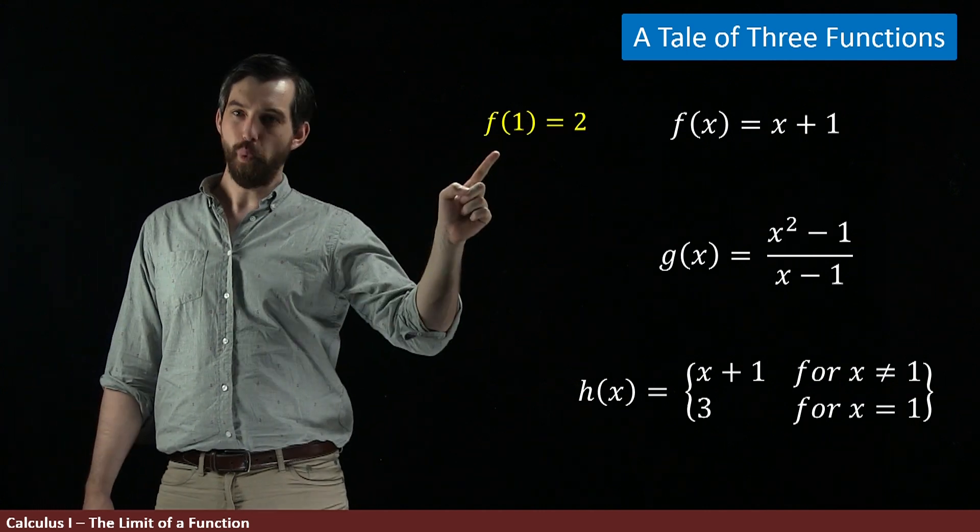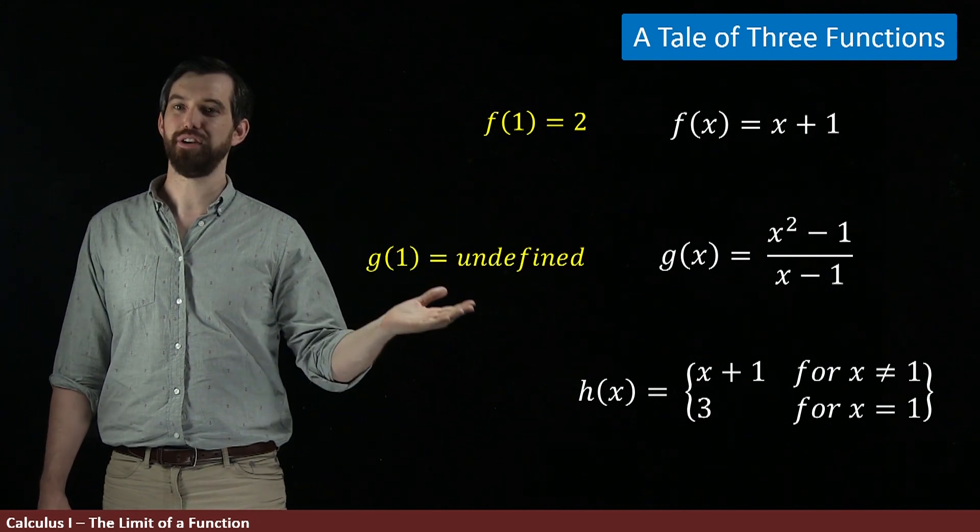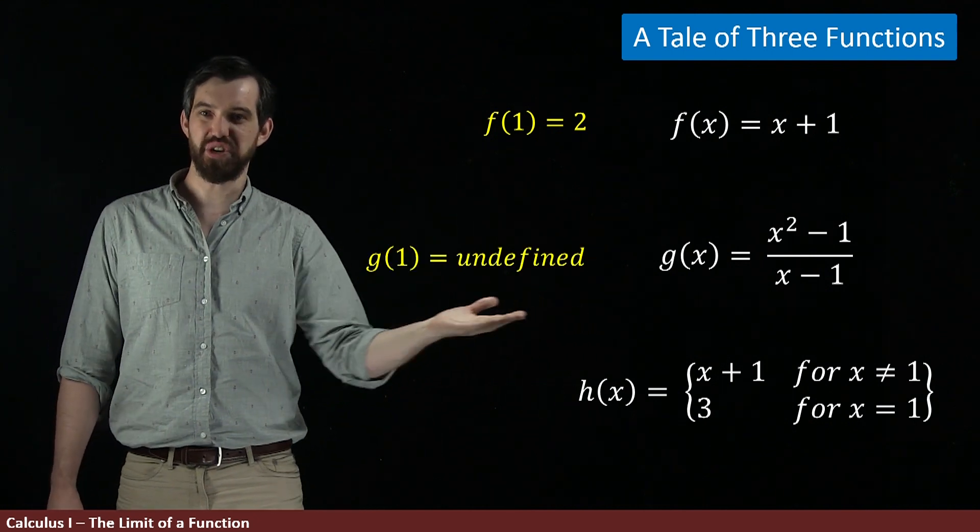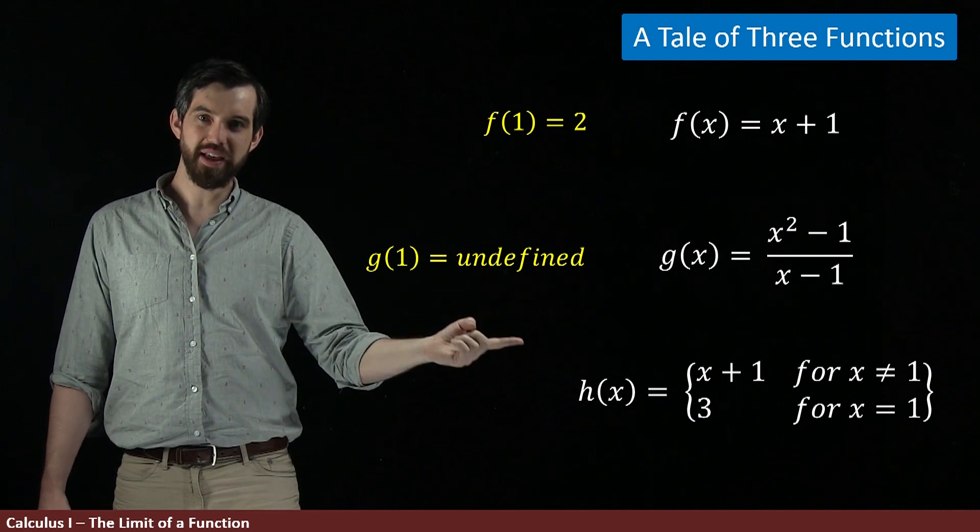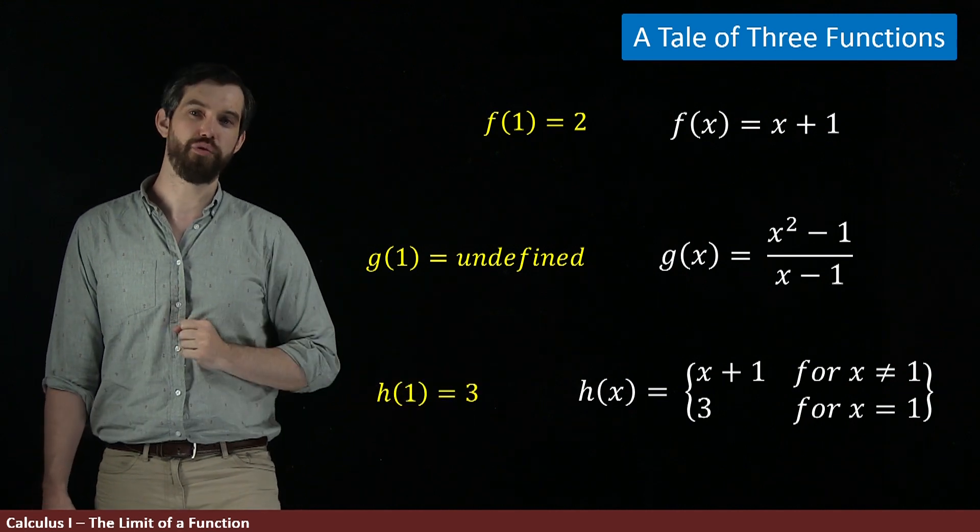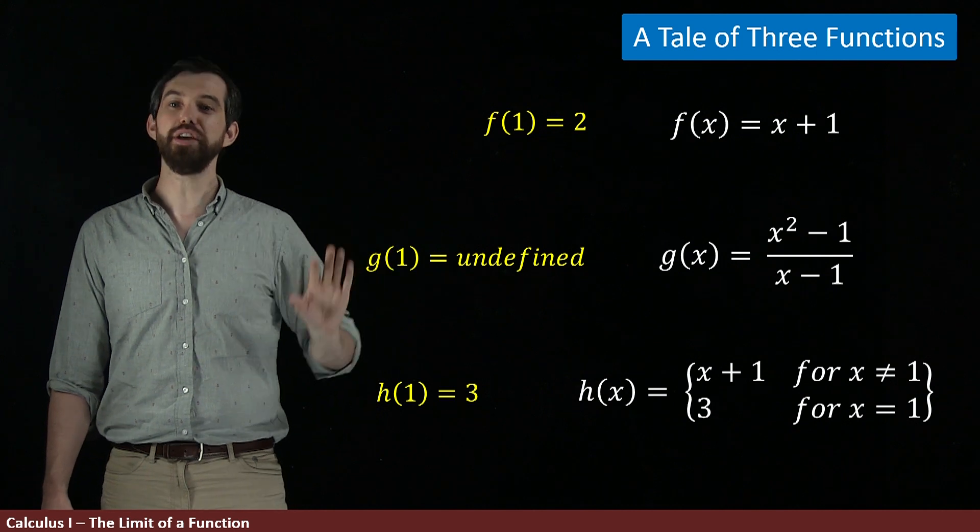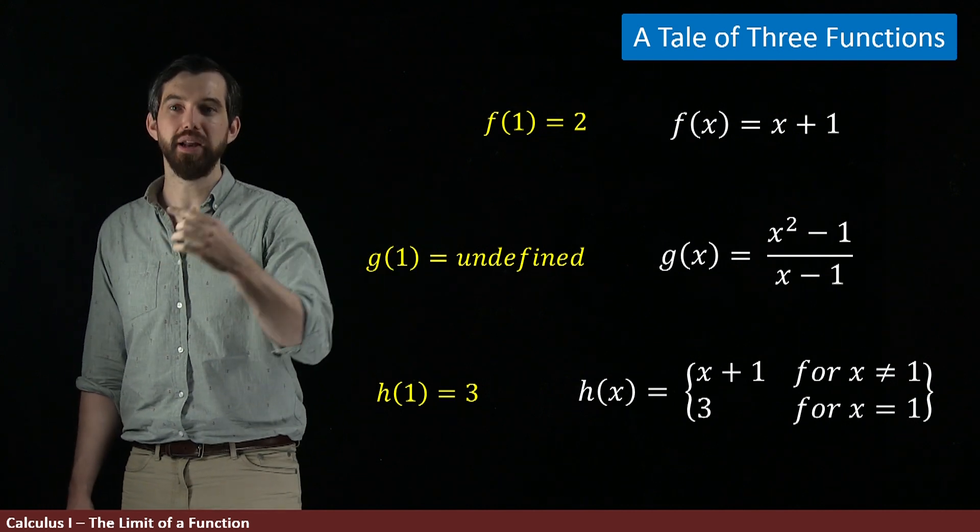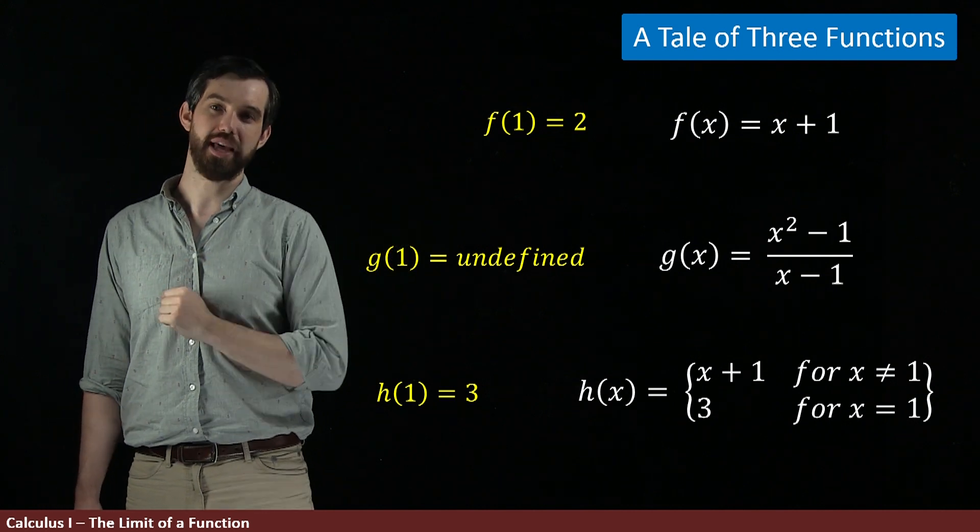Because f of 1 is 2, and g of 1 wasn't even defined—there just was a division by 0, it didn't work out—and then h of 1 is the value of 3. So, these functions are different at the point 1, but other than that, they're going to be the same.